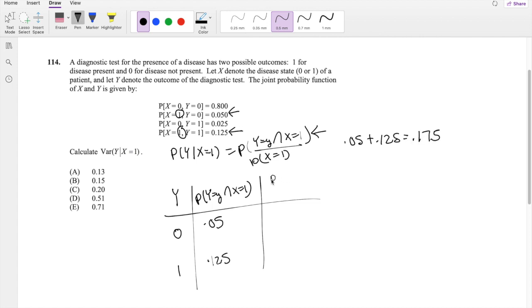So now when I divide it, Y equals some little y and X equals 1 over the whole probability that X equals 1. That's just equal to this column divided by our probability that X equals 1, which is this right here.